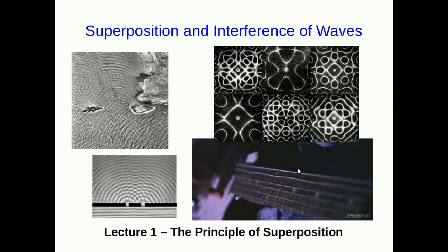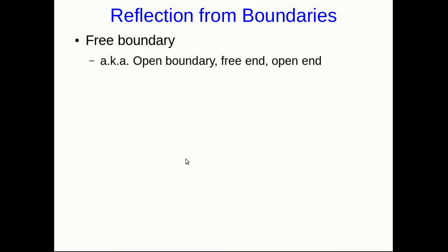Hello, and welcome to Lecture 1 of Superposition and Interference of Waves in PHYS 1201. In this lecture, we're going to look at an important general law of waves called the Principle of Superposition, which tells us what happens when waves overlap with each other. The first thing we're going to look at is something we could have looked at when discussing traveling waves, because it's not directly to do with superposition and interference, but we're going to need to understand this to understand a lot of the demonstrations in this unit.